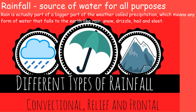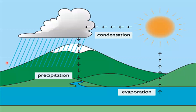Rainfall is a major source of water for all purposes on the earth. Rain is actually part of a bigger category called precipitation, which means any form of water that falls to the earth — like rain, snow, drizzle, hail, and sleet. There are three types of rainfall: convectional rainfall, relief rainfall, and frontal rainfall. These will be studied in detail in the next lesson on the hydrological cycle.